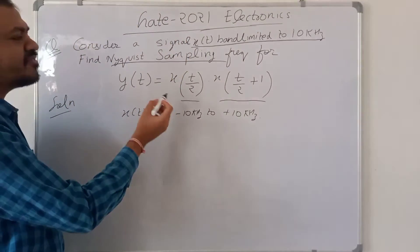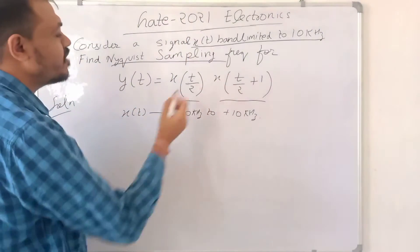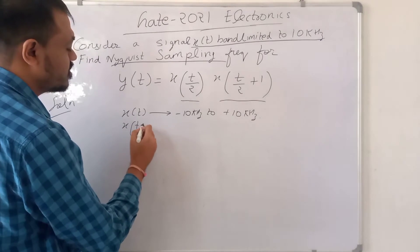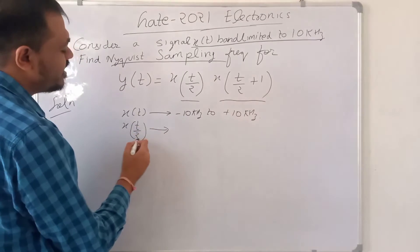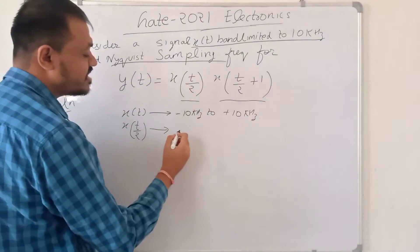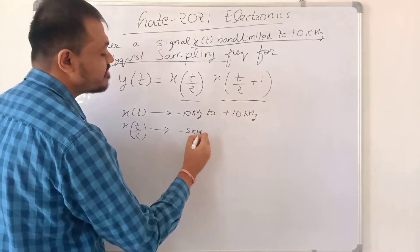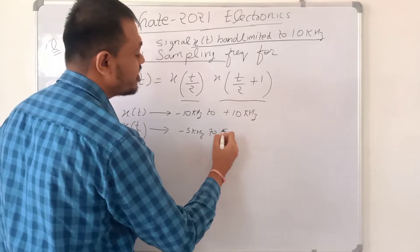Now we have to see only the frequency calculations. When we do time scaling, the frequency will also be scaled. So X(t/2) will exist from minus 5 kHz to 5 kHz.